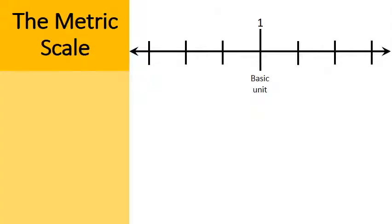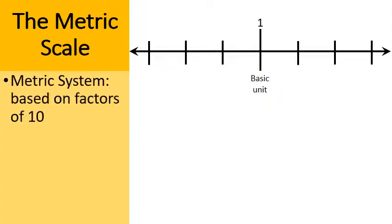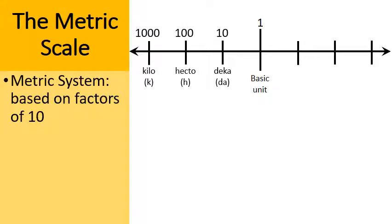Here's a portion of the metric scale. The metric system is really based on factors of ten. What's ten times bigger than one? Ten. Ten times bigger than ten? One hundred. Ten times bigger than 100? One thousand. Going the opposite direction: ten times smaller than one is a tenth, or 0.1. Ten times smaller than a tenth is a hundredth, or 0.01. Ten times smaller than that is a thousandth, or 0.001. The metric system is based on factors of ten.